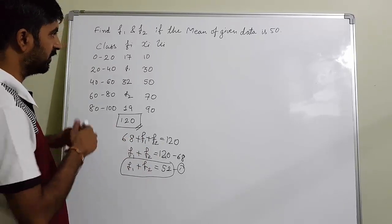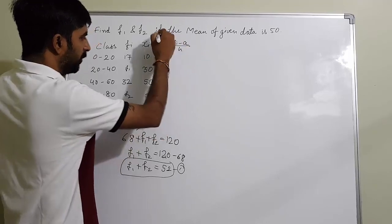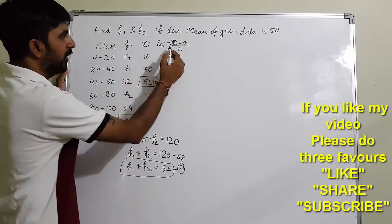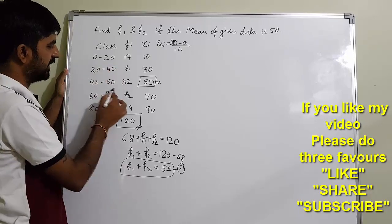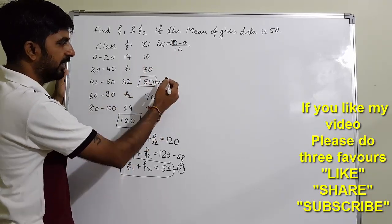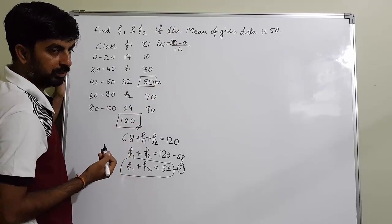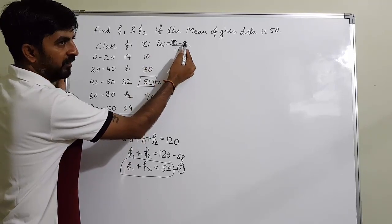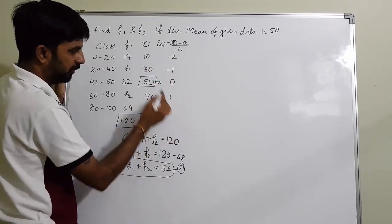First we find ui, which is (xi minus a) divided by h. Here we assume the mean a equals 50 and the class size h equals 20. The midpoints xi are 10, 30, 50, 70, and 90. So ui values come out as: 10 minus 50 divided by 20 equals minus 2, then minus 1, 0, 1, and 2.